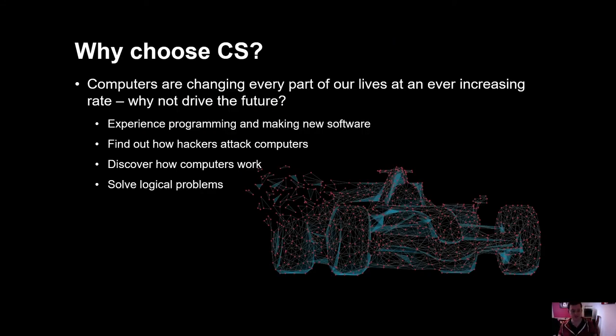Computers are changing every part of our lives all the time and the industry itself is just evolving quicker and quicker every year. Even now, look at the situation that we're in with the pandemic. We're relying on computer science more than we've ever relied on in the past. And look at the ways we've been able to communicate and stay together as a community, as a school community, because of the wonders of computer science.